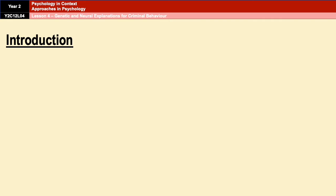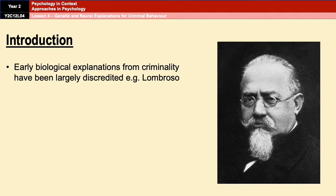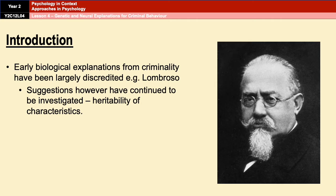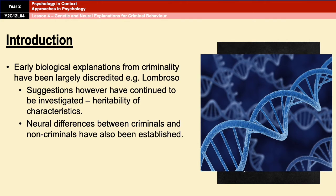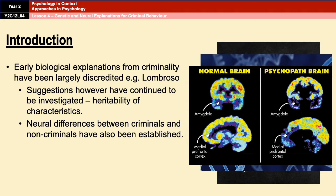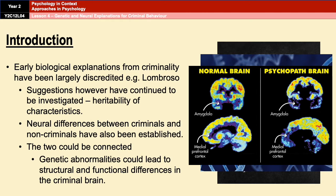Early attempts at biological explanations for criminal behaviour have been widely discredited. The link to the video on the atavistic form should be appearing on your screen now if you need a quick recap. That being said, the suggestion that criminal behaviour is in some way heritable has continued to be investigated with some success. There are also some neural differences between criminals and non-criminals that have been discovered, and it's possible that some underlying genetic abnormalities could cause structural and functional differences in the criminal brain, though they could also just occur individually.